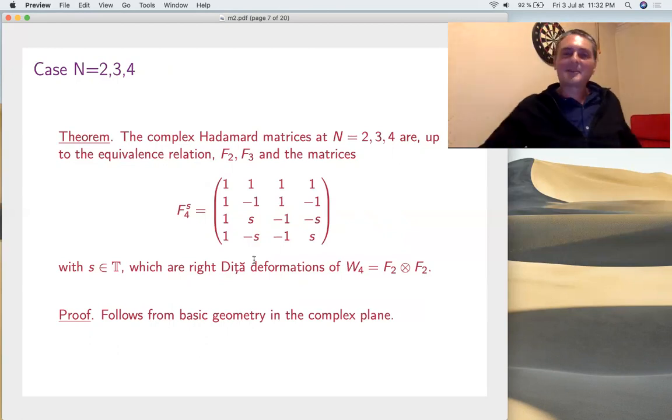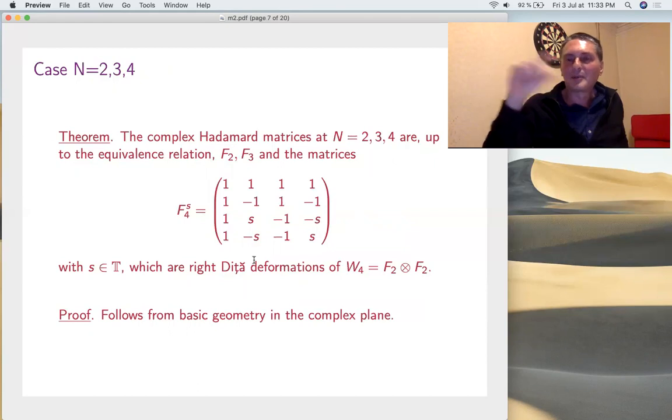And at n is 4, you get not only Fourier, but also its deformations, because F_4, these are deformations of F_2 tensor F_2. Actually, this kind of collapse, they're equivalent. And in the end, up to equivalence, you just get the one parameter family, the parameter being on the circle. You can write it in many forms. That's one of the standard forms. So, it sits here in the parameter s. So, once again, very nice geometry in the plane, I recommend.